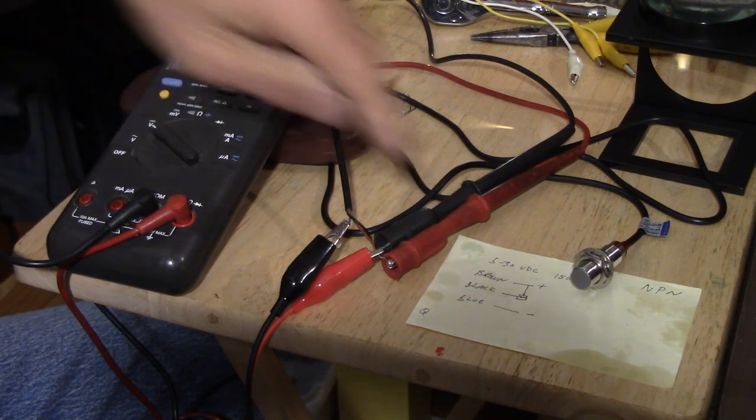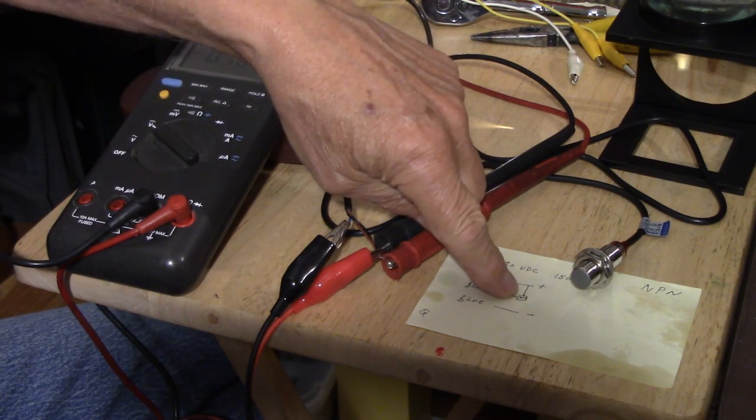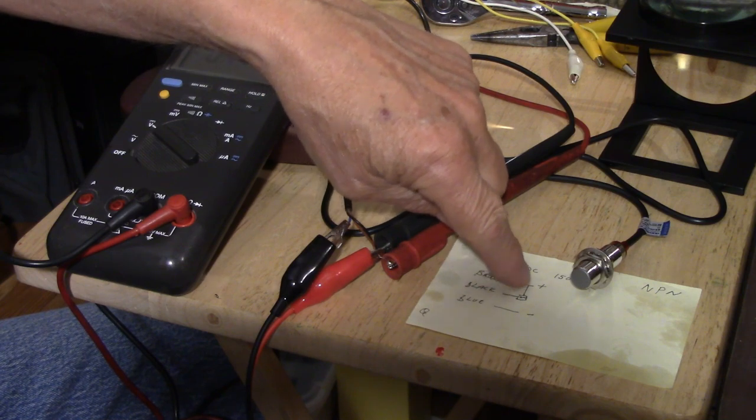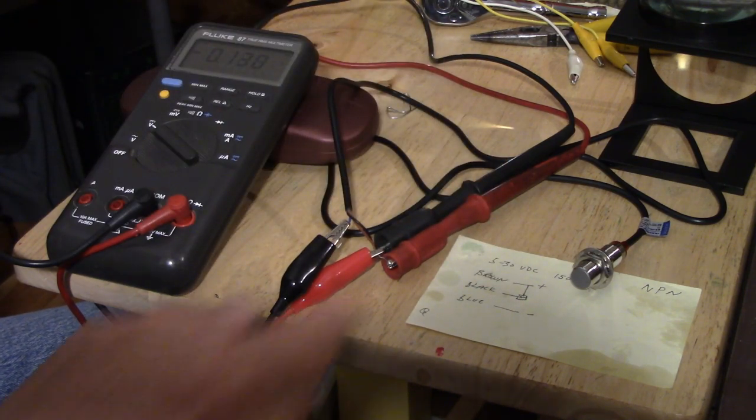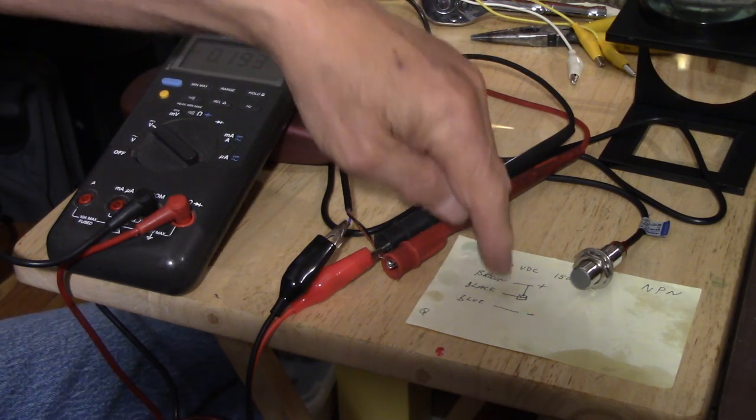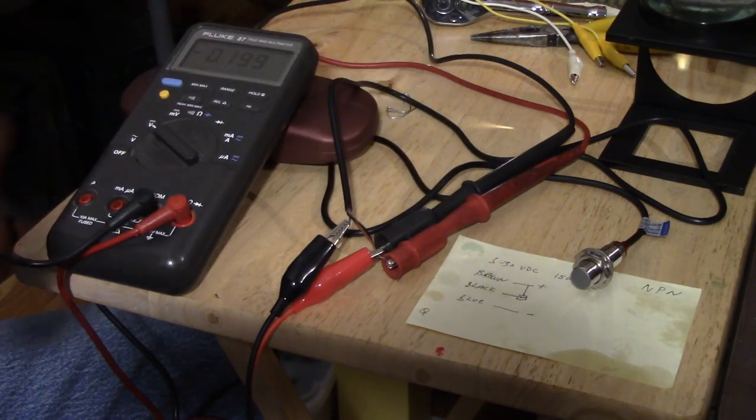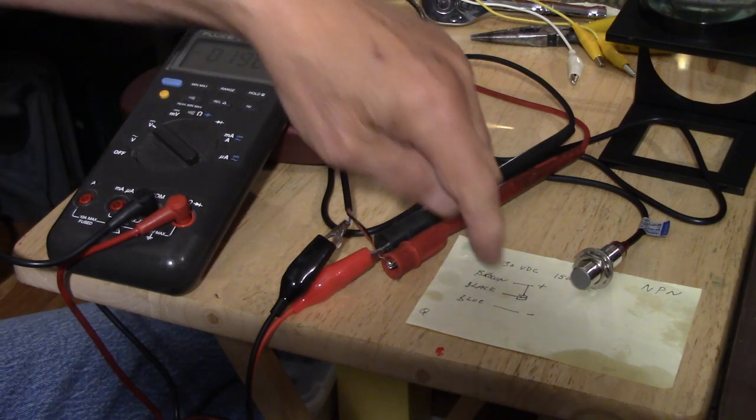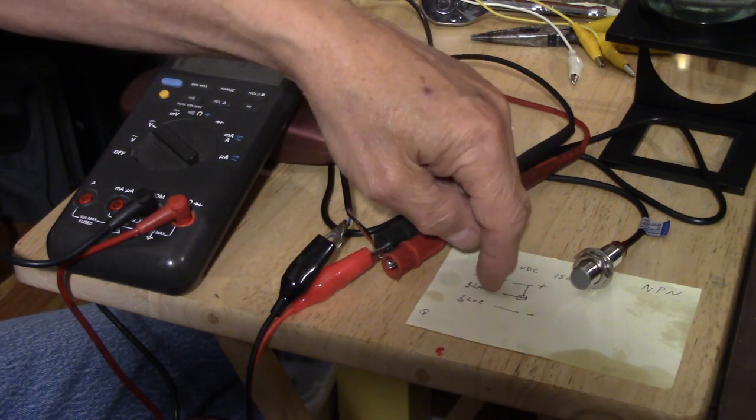What we've got here is a proximity sensor and I don't claim to know anything about this. I had to go and watch a video to learn something about them. One of the first things I learned was that they normally have a brown and a black and a blue wire coming out of them, like on this piece of paper here.